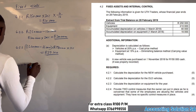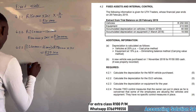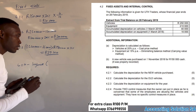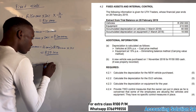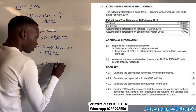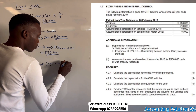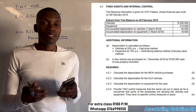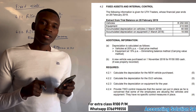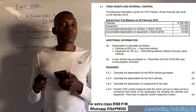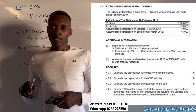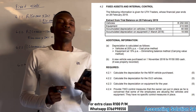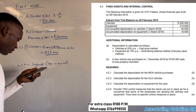Control measure number one: we must make sure that we have a log book. Every employee must sign in and sign out. You cannot just drive a business vehicle without signing in. This way, we can see exactly who was using the vehicle, and if petrol is overused, we will know who to hold accountable.